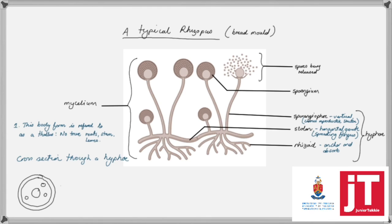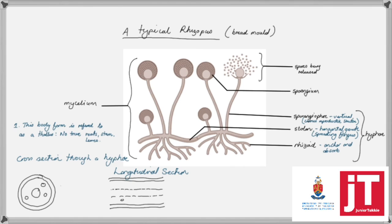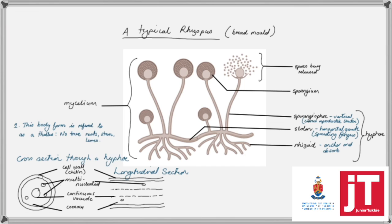Taking this a little bit further, previous papers have asked questions about hyphae and their specific structure — drawing a cross section and a longitudinal section of a hyphae. In the longitudinal structure and cross section, we see the cell wall made up of chitin on the outside. We can see the nuclei present inside the coenocytic cytoplasm — very important to note because it is a continuous cytoplasm in which we find multiple nuclei, so it is multi-nucleated. There is also a continuous vacuole that runs through the hyphae.